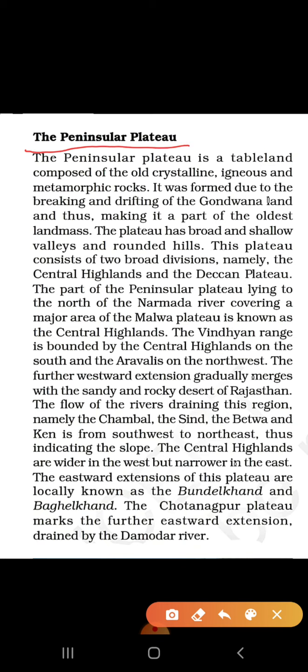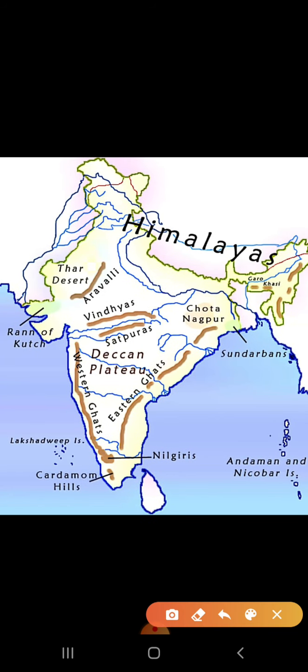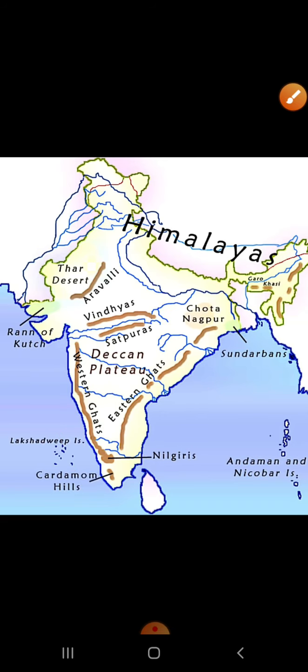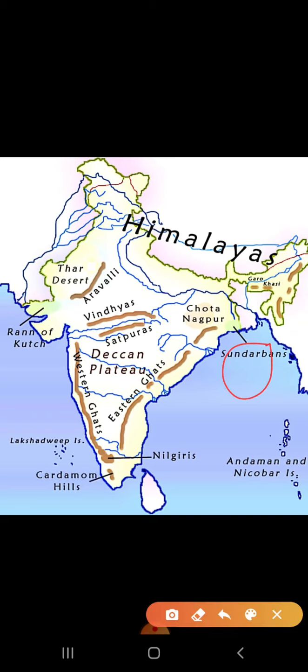Today's topic is the Peninsula. First of all, we must know what a peninsula is. A peninsula is a piece of land that is surrounded by water from three sides. We can see on the map this part of India — it is surrounded by water from three sides, so this is a peninsula. The opposite of this is a bay, like the Bay of Bengal, where water is enclosed by land from three sides.